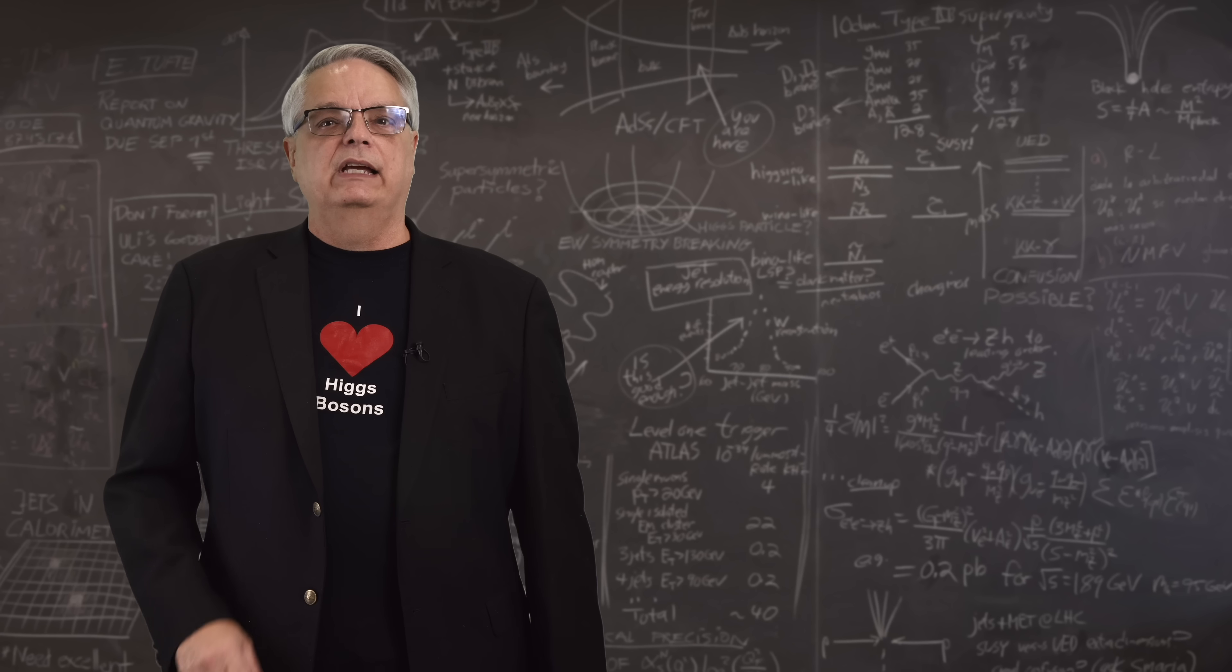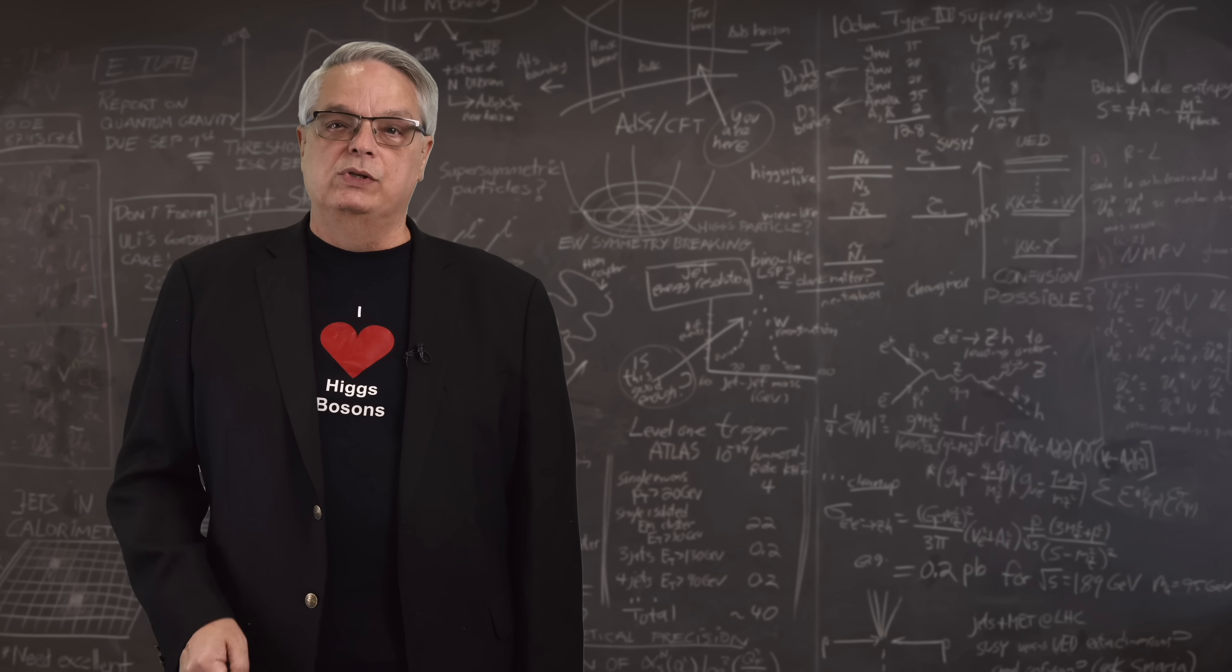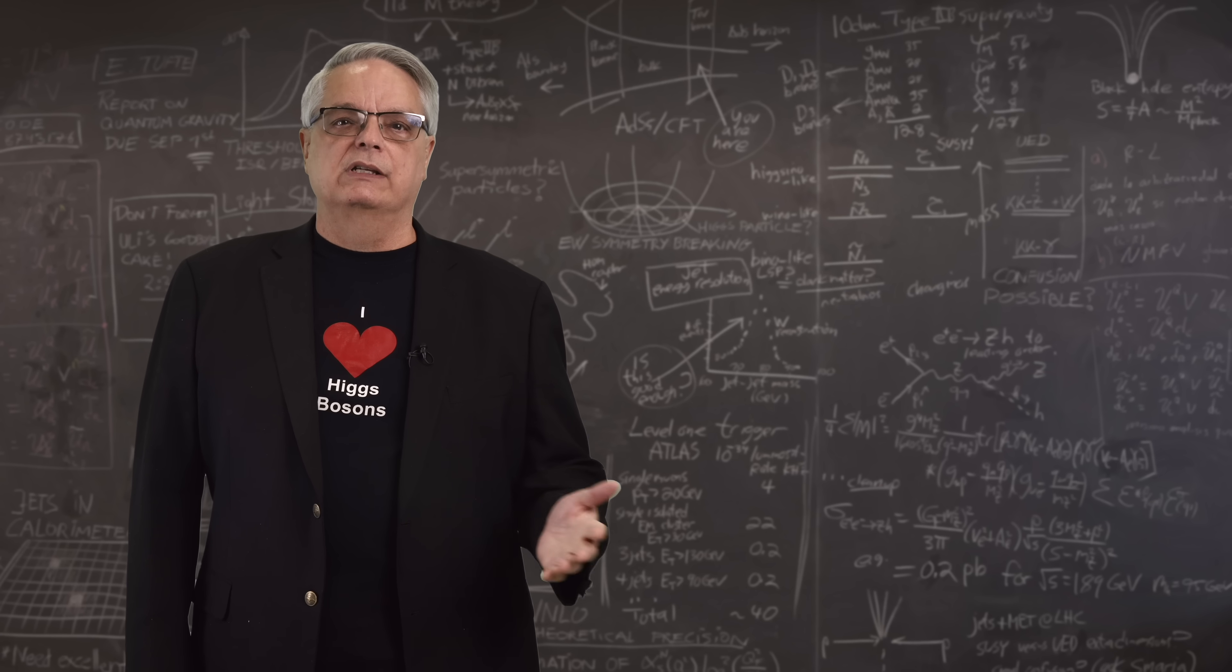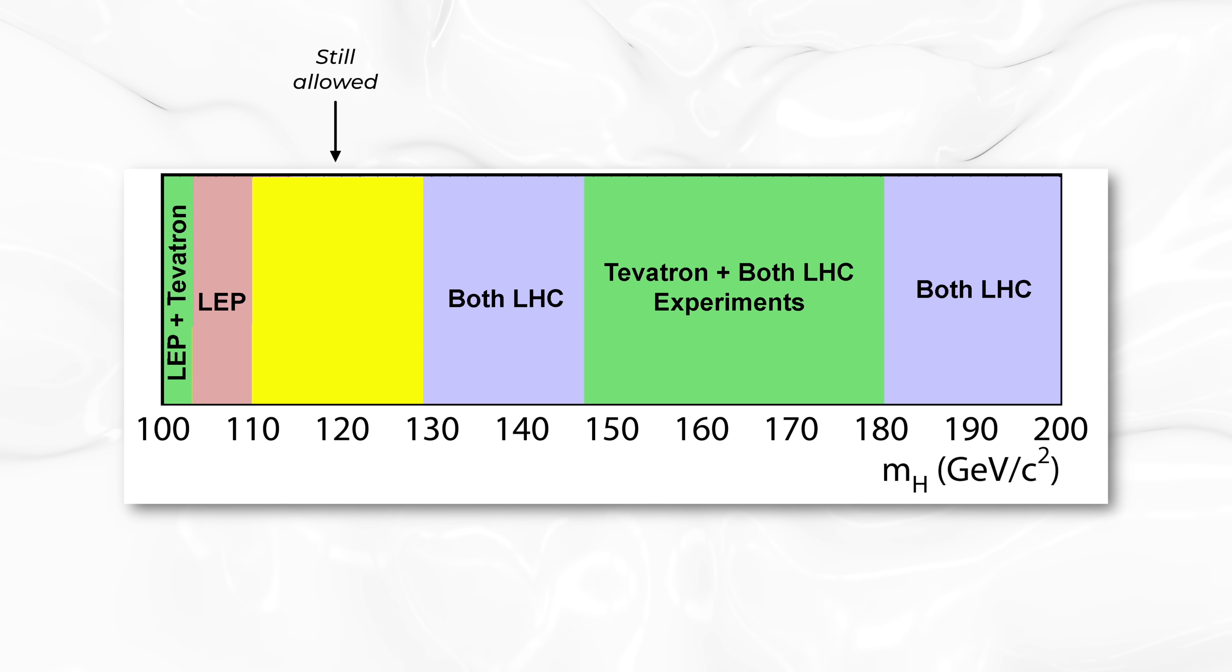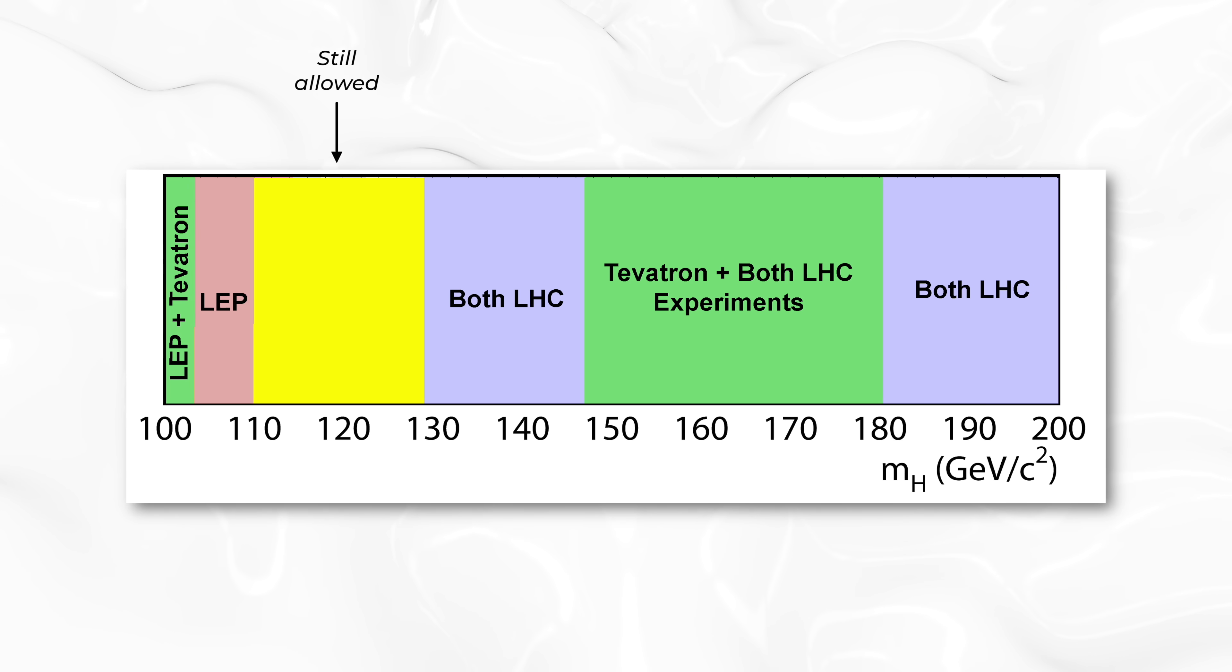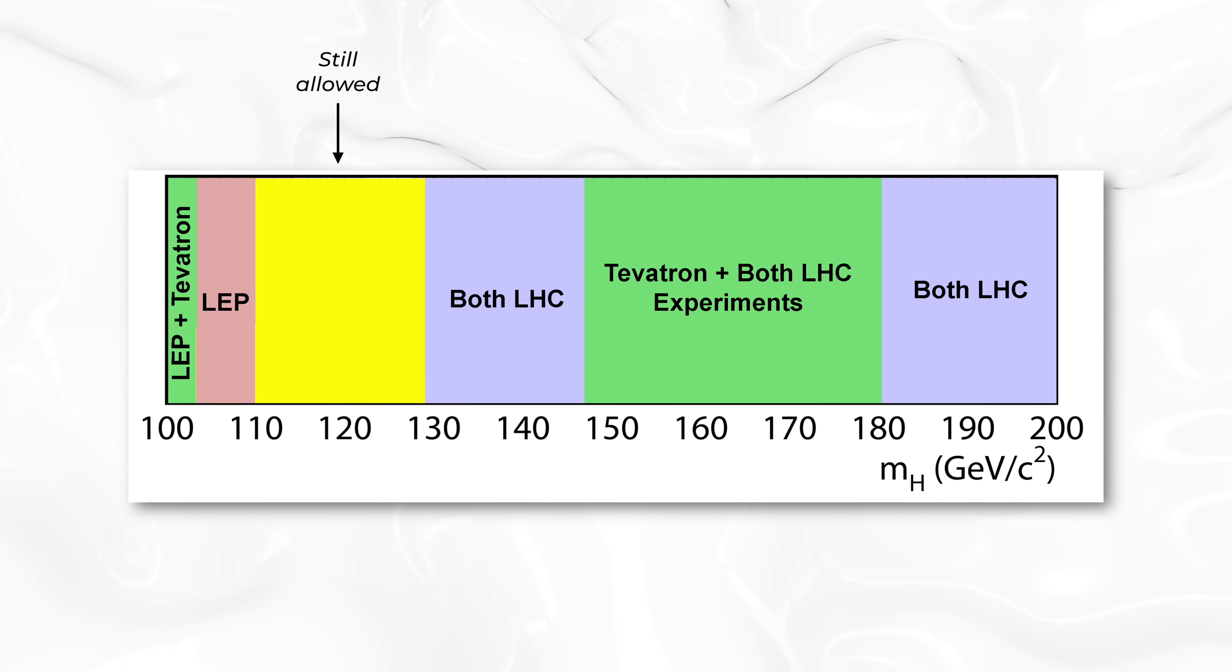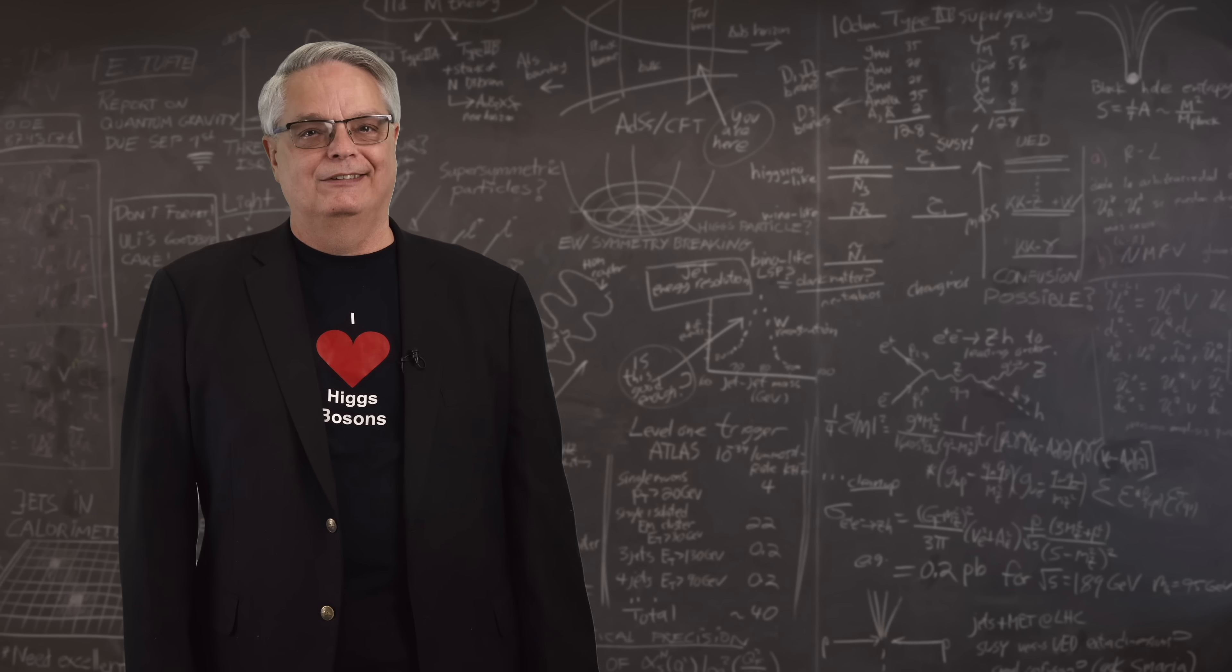So, with the LHC in the race, the only advantage the Tevatron experiments had was that we had years of experience working with the detectors. There was always the hope that the Tevatron scientists would find the Higgs first. But the odds didn't look good. By the spring of 2012, the LHC experiments ruled out Higgs boson mass between 130 and 474. And then July 2012 rolled around. It was time for sudden death.